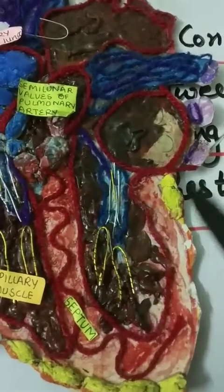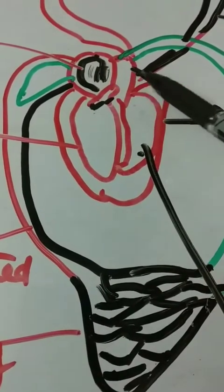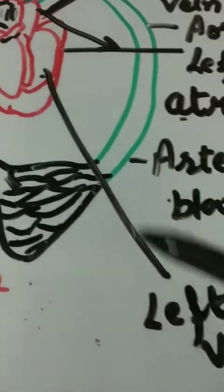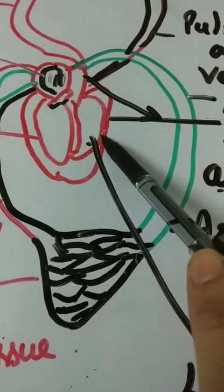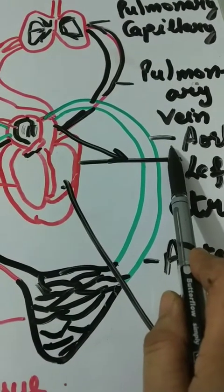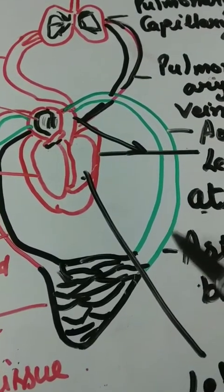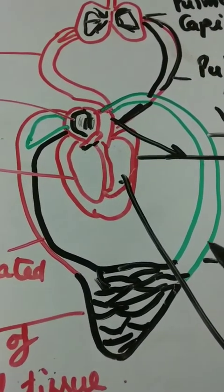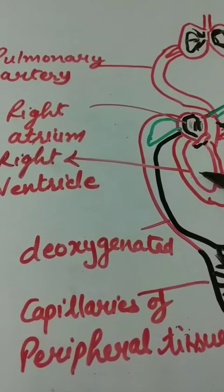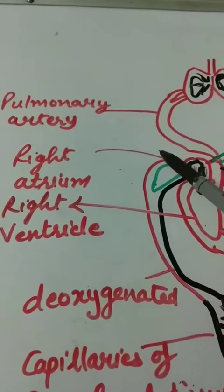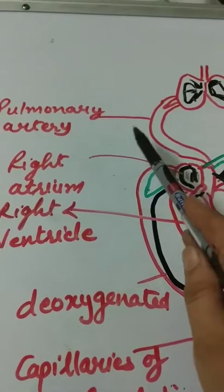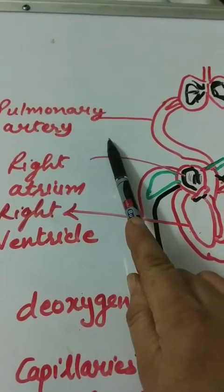Next, both auricles and ventricles contract. The oxygenated blood from the left ventricle is pumped into the aorta and is distributed to all parts of the body by arteries. The deoxygenated blood from the right ventricle is pumped into the pulmonary artery and is transported to the lungs by pulmonary arteries for oxygenation.